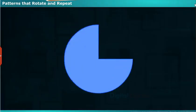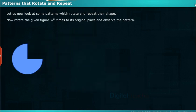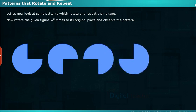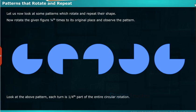Let us do an example on patterns that rotate and repeat. Let us now look at some patterns which rotate and repeat their shape. Observe the given figure, now rotate the given figure one-fourth times to its original place and observe the pattern.